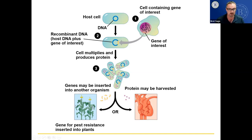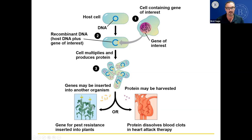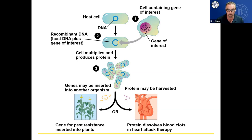That's one thing you can do — put genes into plants. You could also harvest proteins. If this gene caused production of a protein that dissolves blood clots when people have a heart attack, you could make lots and lots of this protein in big vats with bacteria. This is called a fibrinolytic enzyme that breaks down clots and could help people with heart attacks. There's a possibility this figure will be on the test.